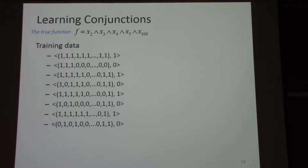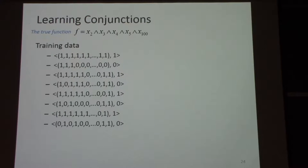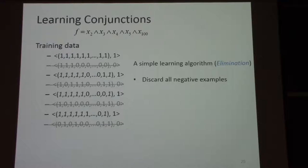Let's get into the problem of learning conjunctions. We've seen this data before — we have 8 or 9 examples here, and there is a true function. These examples are 100-dimensional feature vectors with a label. The label is obtained by applying function f to the feature vector, and the function f is hidden — once the data is generated, nobody gets to see the function. I'm going to define the following simple learning algorithm called 'elimination.' Step 1: get rid of all the negative examples, because in this algorithm we are not going to use them.